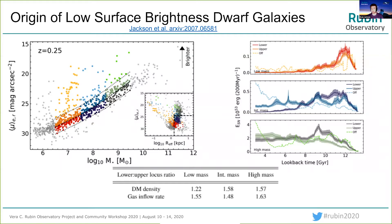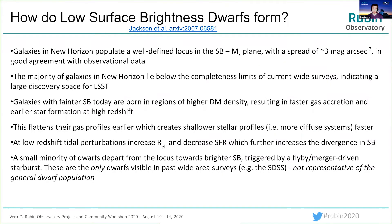This causes rapid star formation and high supernova feedback that quenches these galaxies. New Horizon galaxies populate a well-defined locus in the surface brightness stellar mass plane with a spread of around three mags per arc second squared, in good agreement with observational data. Low surface brightness galaxies form the majority in the dwarf regime, indicating a large discovery space for LSST. Galaxies with fainter surface brightnesses today are born in regions of higher dark matter density, resulting in faster gas accretion and more intense star formation at early epochs. The resultant supernova feedback flattens gas profiles, creating shallower stellar profiles and more diffuse systems. At low redshift, tidal perturbations accelerate the divergence in surface brightness.